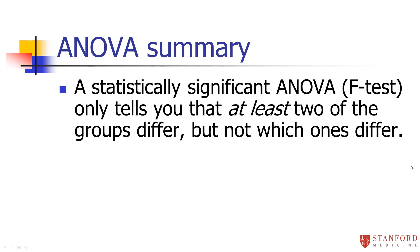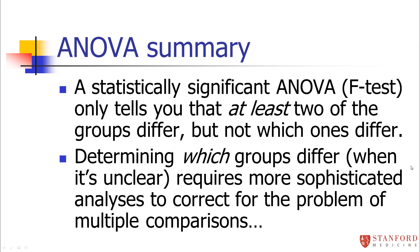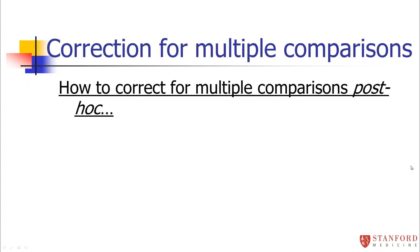Now, with a statistically significant ANOVA, we know at least one of the groups differs, but it doesn't tell us which ones. If we want to answer where those specific differences lie, we have to do post hoc tests — actually comparing specific groups. Because we're comparing multiple groups, we have to correct for multiple comparisons. The most common correction is the Bonferroni correction: you simply divide your p-value cutoff of 0.05 by the number of tests you run, making a more stringent cutoff for statistical significance. Bonferroni is very conservative — usually overly conservative.